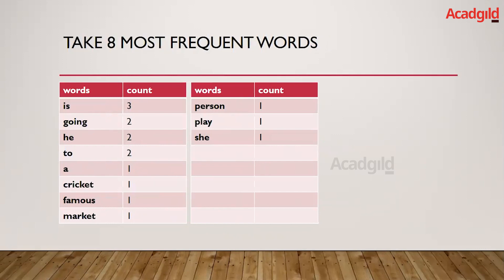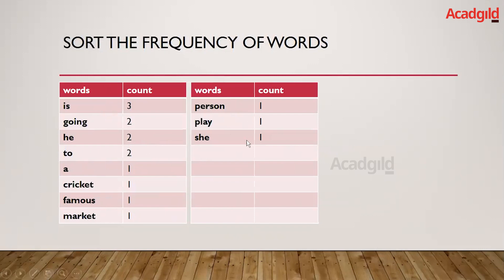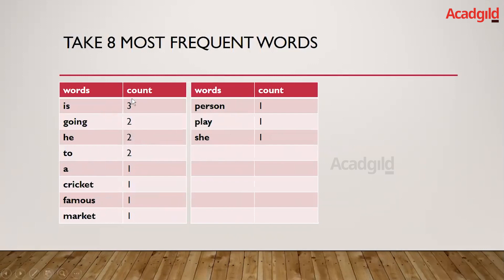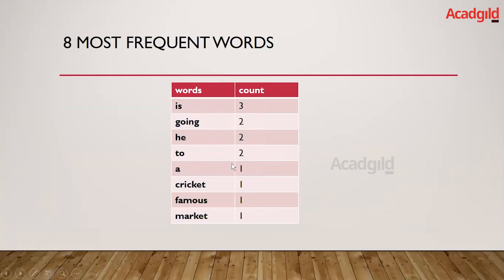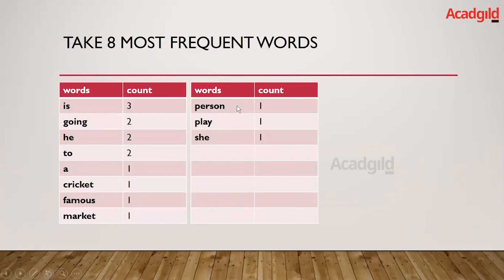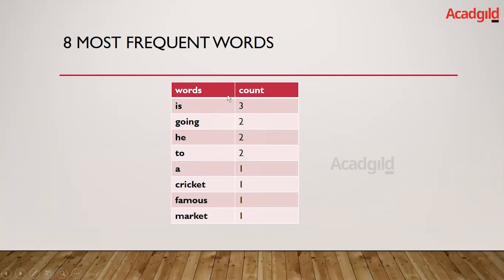In this example there are a total of 11 words. From these 11 words I have taken the top most frequent words — the top eight. With the top eight frequent words selected, the histogram now contains: is, going, he, to, a, cricket, famous, and market. From the previous histogram, 'person,' 'play,' and 'she' have been removed as they are less frequent words. Training the model will focus on these eight most frequent words.